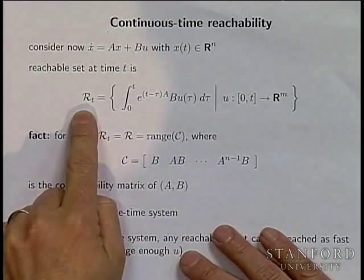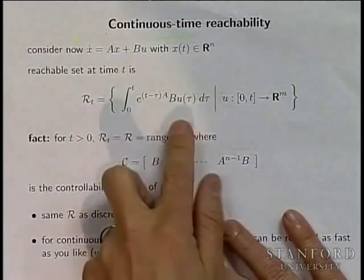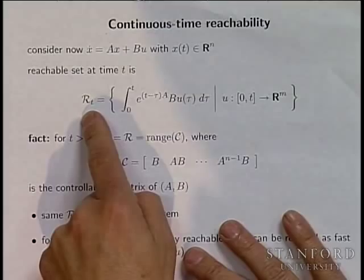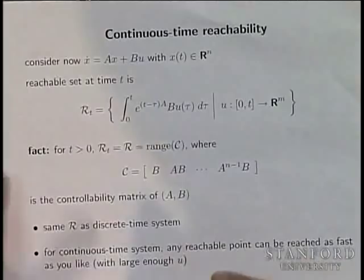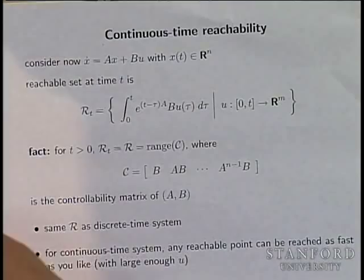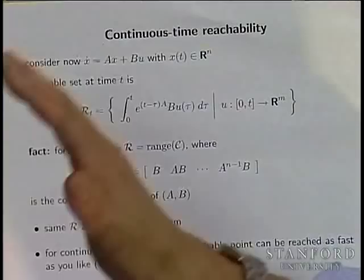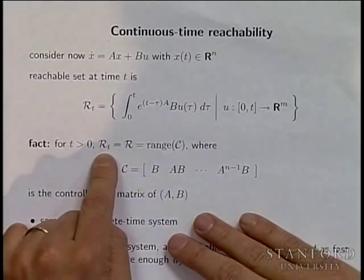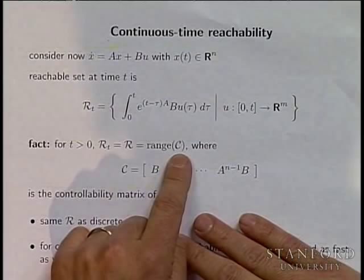Continuous time reachability — we looked at that last time. We looked at what the reachability subspace is for a continuous time system: the set of all points you can hit in T seconds starting from zero. The answer turned out to be really simple. If T is positive, the set of points you can hit is the range of the controllability matrix, period. It doesn't change with T.